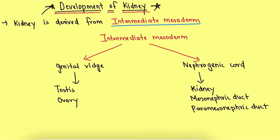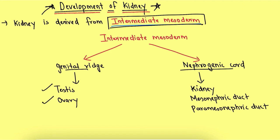The first point to keep in mind is that the kidney is derived from intermediate mesoderm. This intermediate mesoderm would give rise to the genital ridge and the nephrogenic cord. The genital ridge would later develop into the testis and ovary, while the nephrogenic cord would later develop into the kidney, mesonephric duct, and paramesonephric duct.